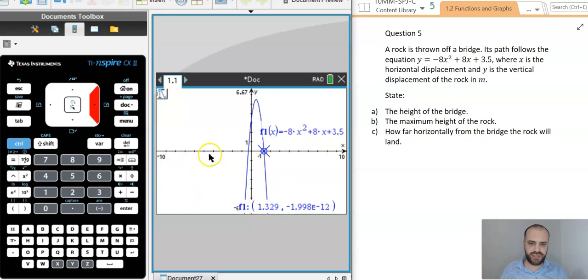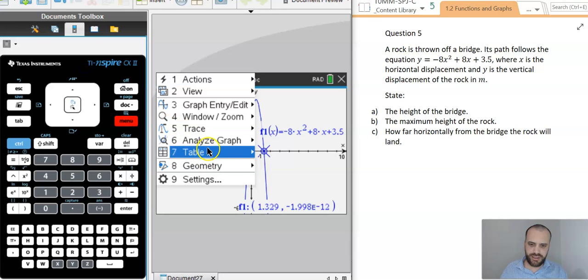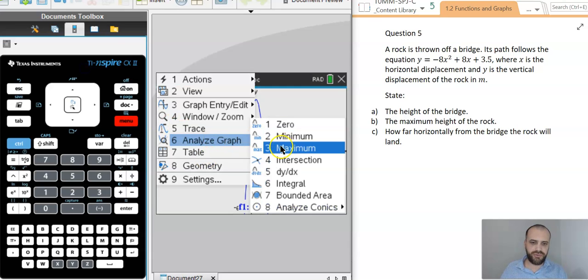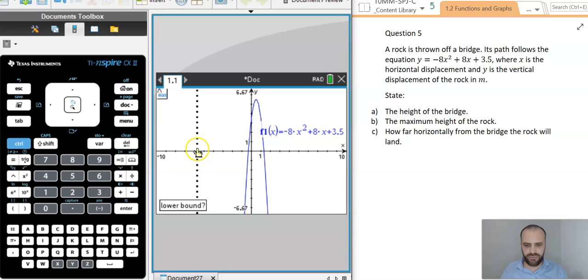Now, there are other ways to do what I've just done. We can analyze the graph, and we can look for the maximum. Now, we need to look for a lower bound and an upper bound, and there's our maximum, 0.5, 5.5. We found that using trace.